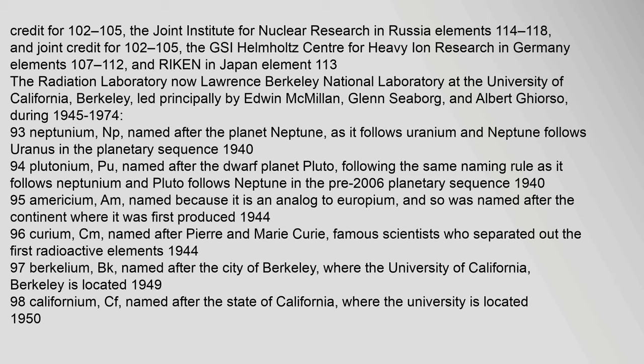Element 95, Americium (Am), named because it is an analogue to Europium and so is named after the continent where it was first produced, 1944. Element 96, Curium (Cm), named after Pierre and Marie Curie, famous scientists who separated out the first radioactive elements, 1944. Element 97, Berkelium (Bk), named after the city of Berkeley where the University of California, Berkeley is located, 1949.